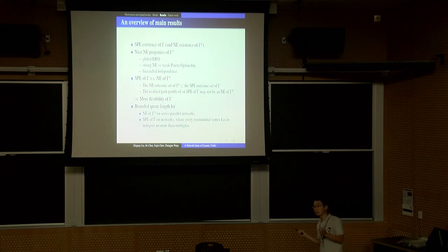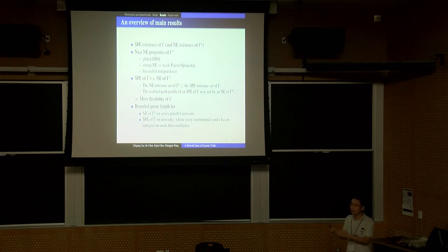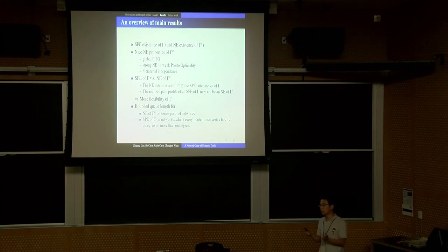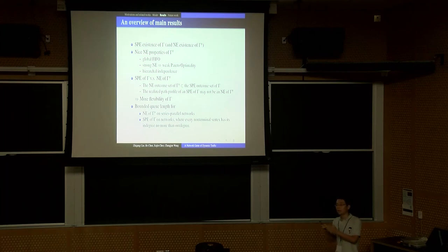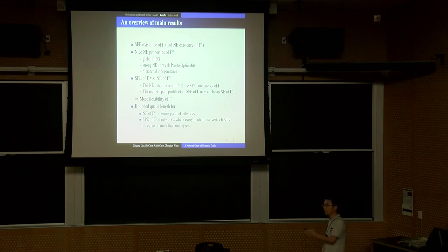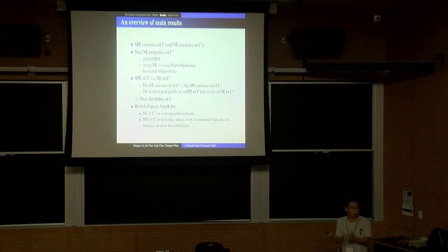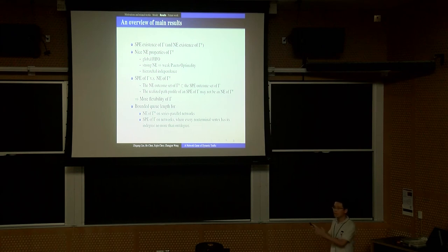Then we study another problem. If at each time the number of players entering the network is no larger than the minimum OD cut size, then no matter the queue length at each edge and at any time, it's always bounded by a constant. The constant can be determined by the parameters of the network. This has been listed as an open problem by some other works.